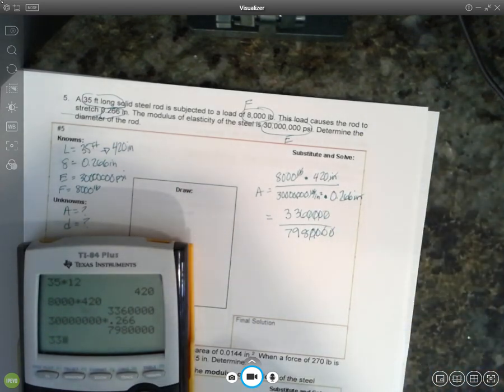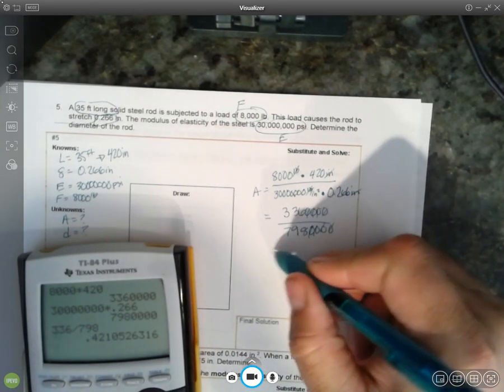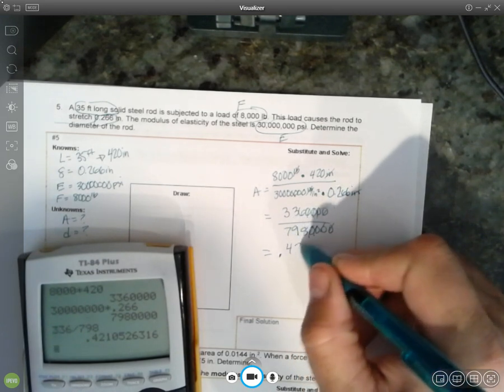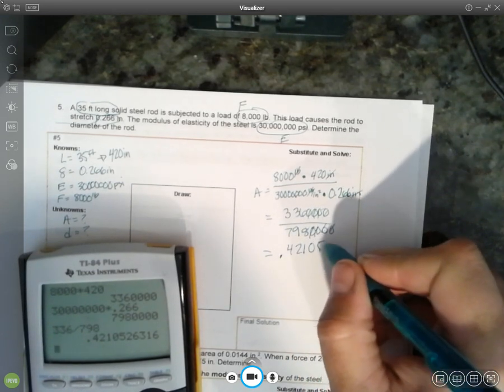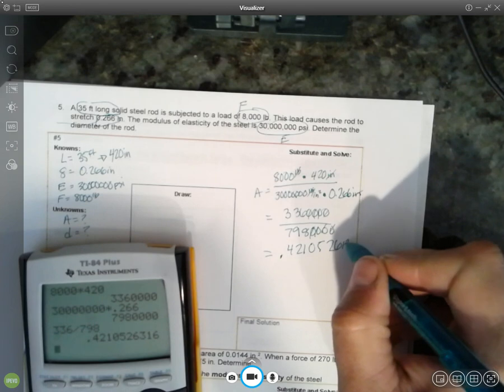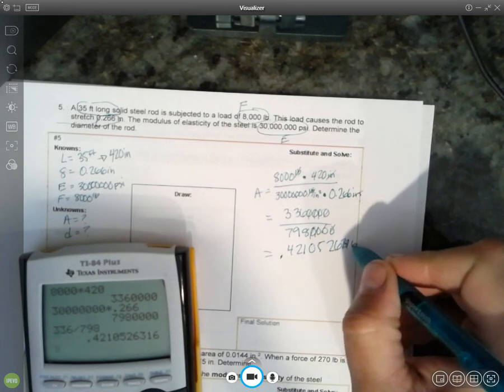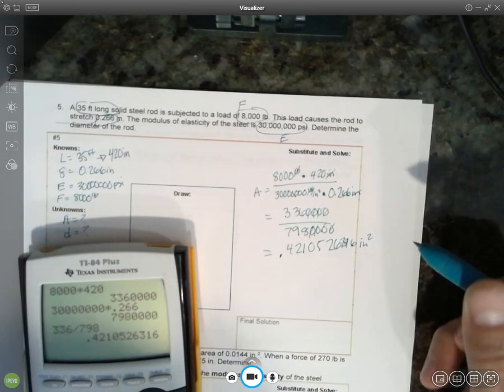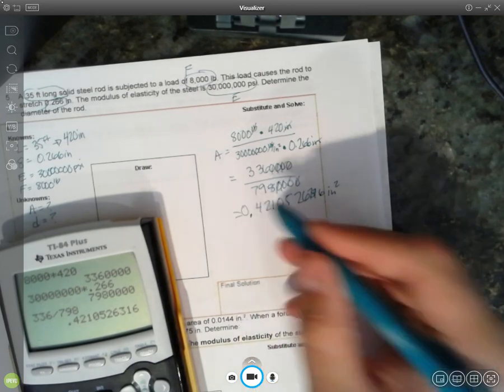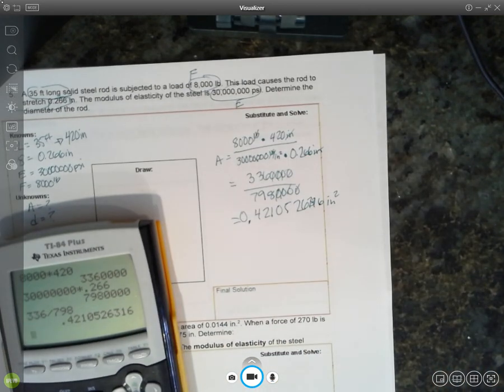336 divided by 798 is an area of 0.42105263166 inches squared. And so we know the area. We need the diameter.